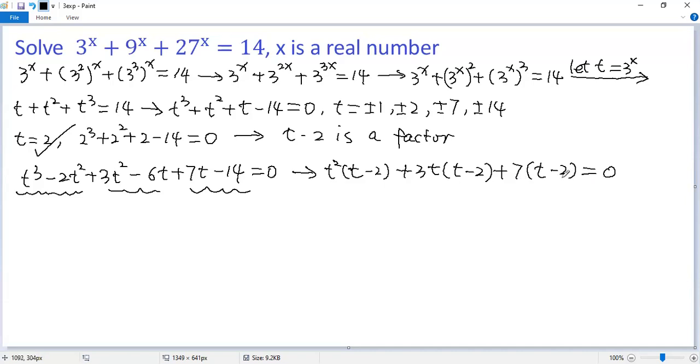Now we can take the new common factor t minus 2 out. So for the first term, t squared, for the second term, 3t, for the last term, 7, times that equals 0.